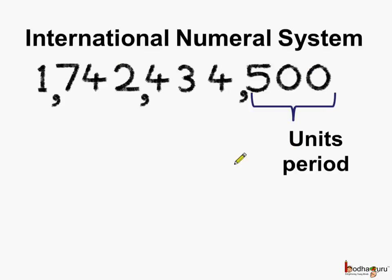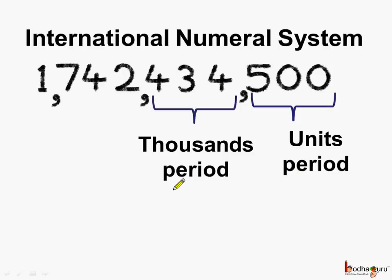This is the units period. We start from the rightmost digit and three places form the units period, and there is the first comma. Next, we have the thousands period. The next three digits come under thousands period, and we put the second comma.